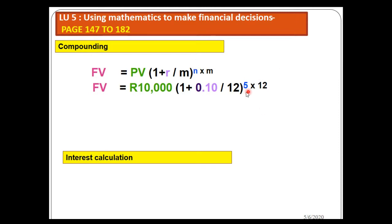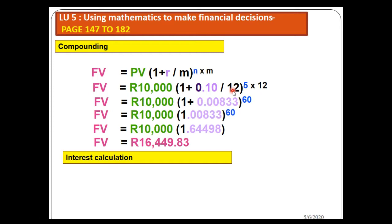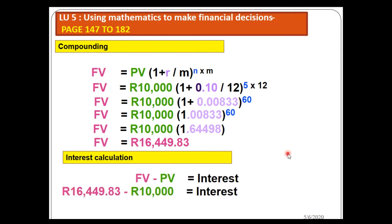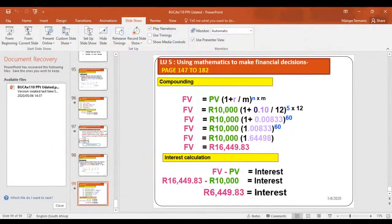If it were daily, I would use five times 365 and 10% divided by 365. Solving this, the future value is 16,453.09 — wait, 16,449.80. The interest generated is 6,449.80. The only change was the number of periods and the interest rate, because I divided by the frequency. Please read the question carefully so you use the correct frequency. Thank you very much, and please go through your prescribed material to understand better.